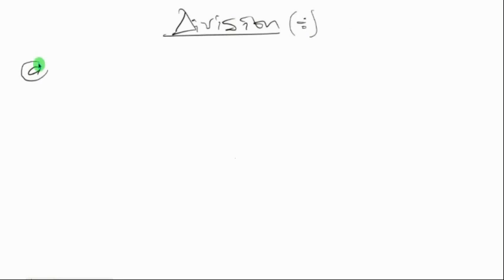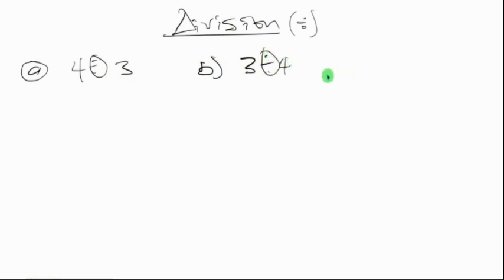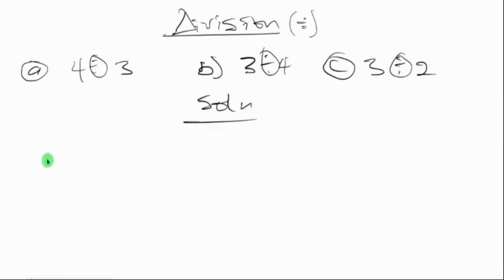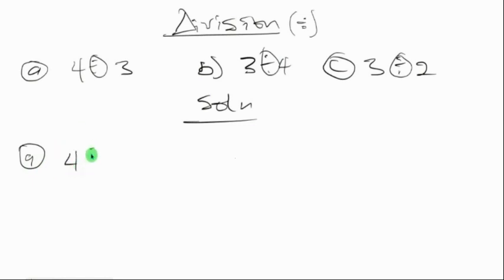For example A we have four divided by three. For B, to check commutativity, we'll have three divided by four. For C we'll have three divided by two. Now the difference when solving division is we don't divide directly, because we can only divide when the mod is involved. Since three is not the mod, we equate the expression to x. So four divided by three in mod five equals x.